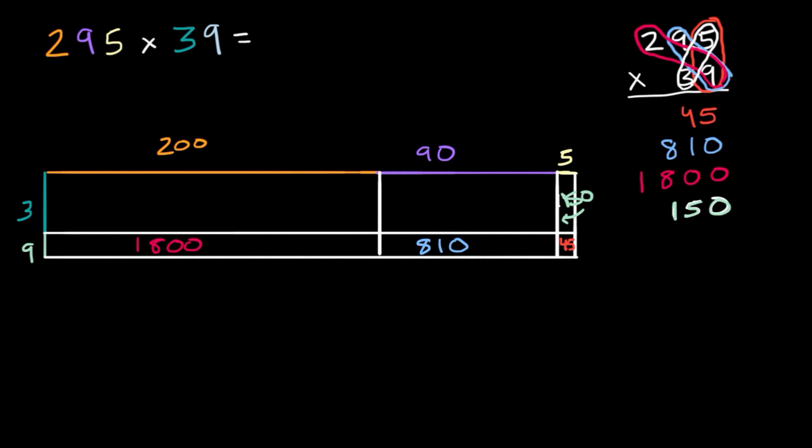Then I can do 30 times 90. So one way to think about it is three times nine is 27. 30 times nine is 270. 30 times 90 is 2700. And where is that on this area model? This is 30. What is 30 times 90? That is 2700, what I just wrote down. So that is this 2700.